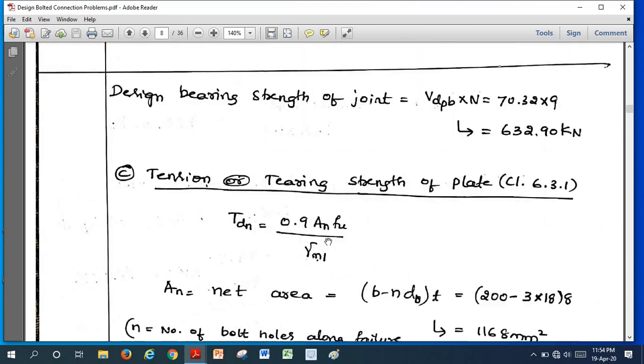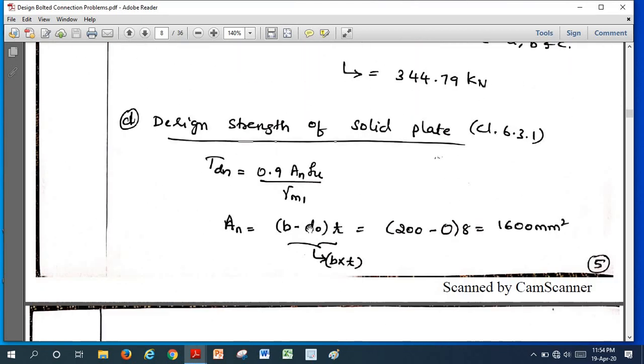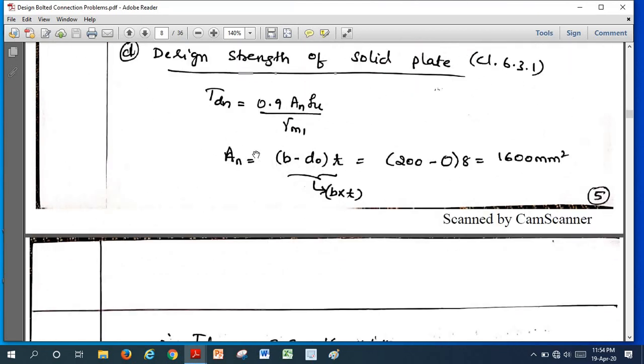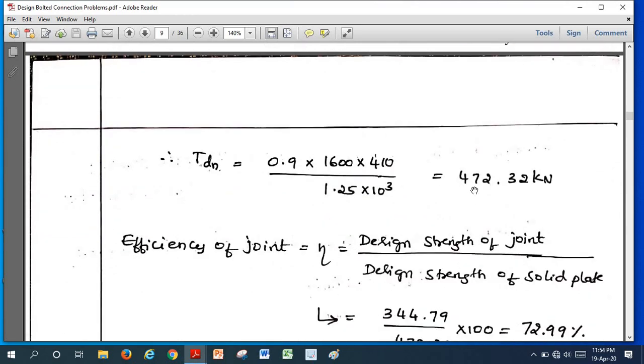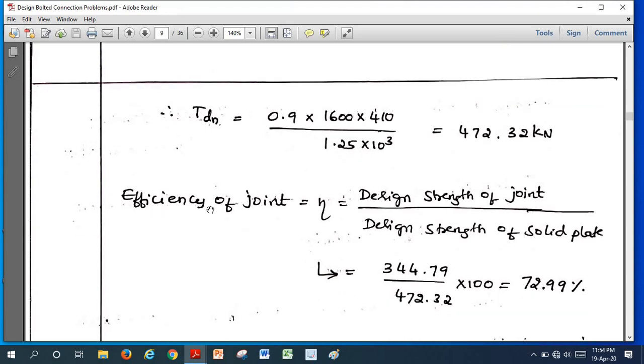We should calculate here that comes out to be here b - n dₕ, we take the same formula, but here there is no bolt hole here since it is a solid plate, this portion will become zero, 200 × least plate thickness, we get 1600 mm². fᵤ is 410, γₘ is 1.25, if we substitute we get 472. This is the strength of the solid plate without any joint.